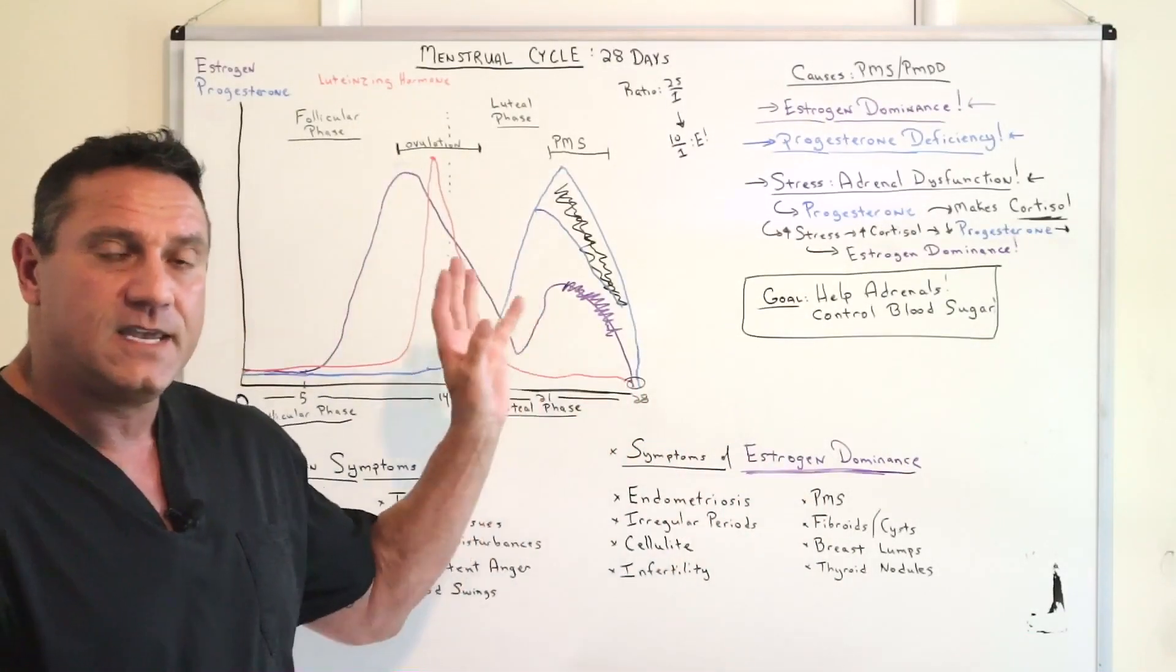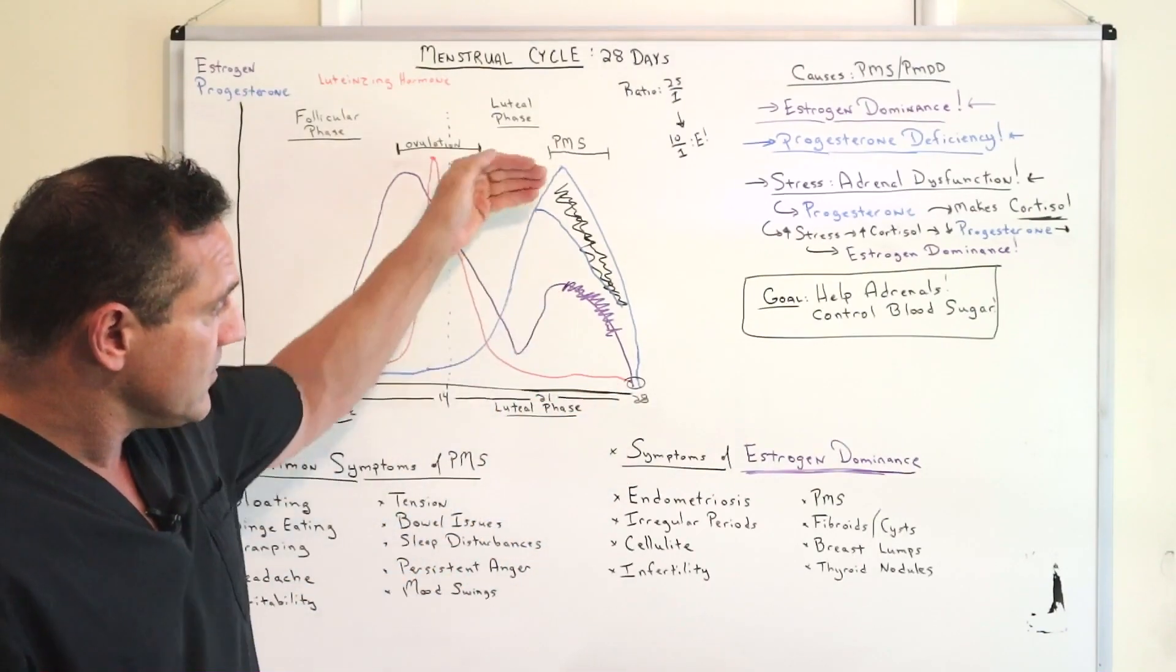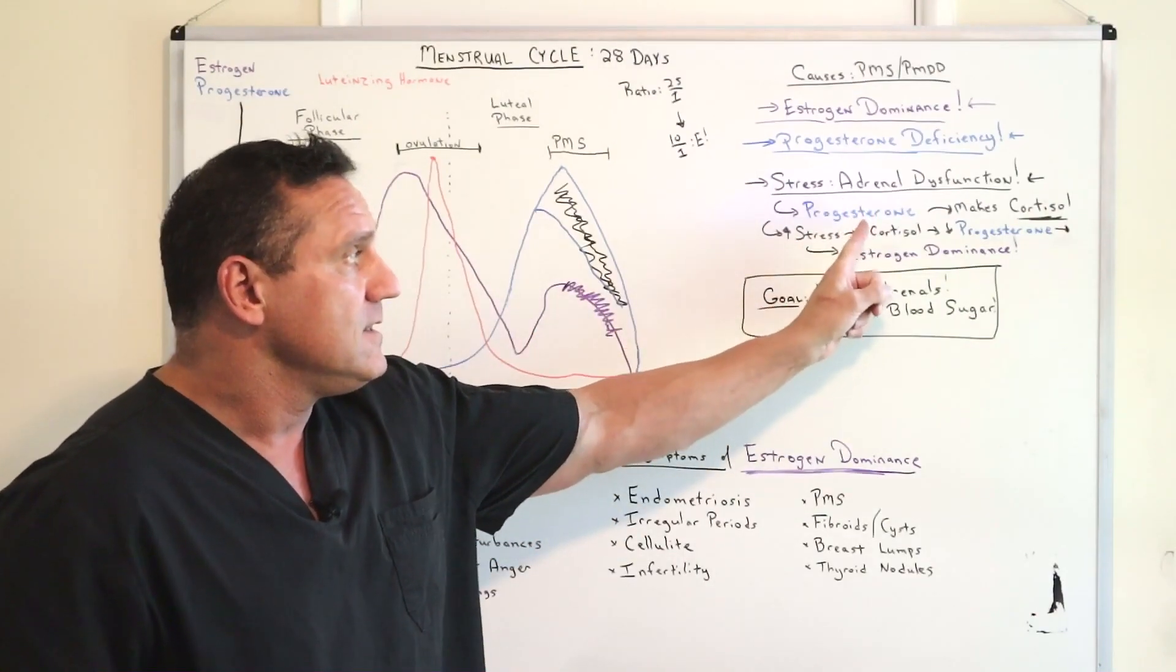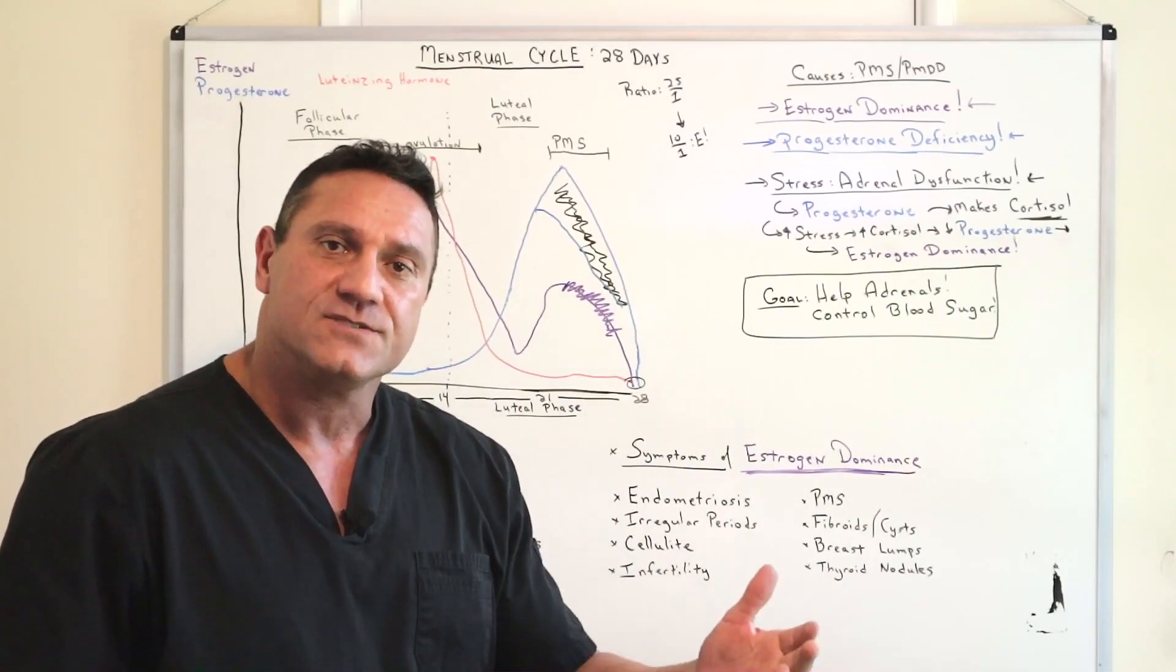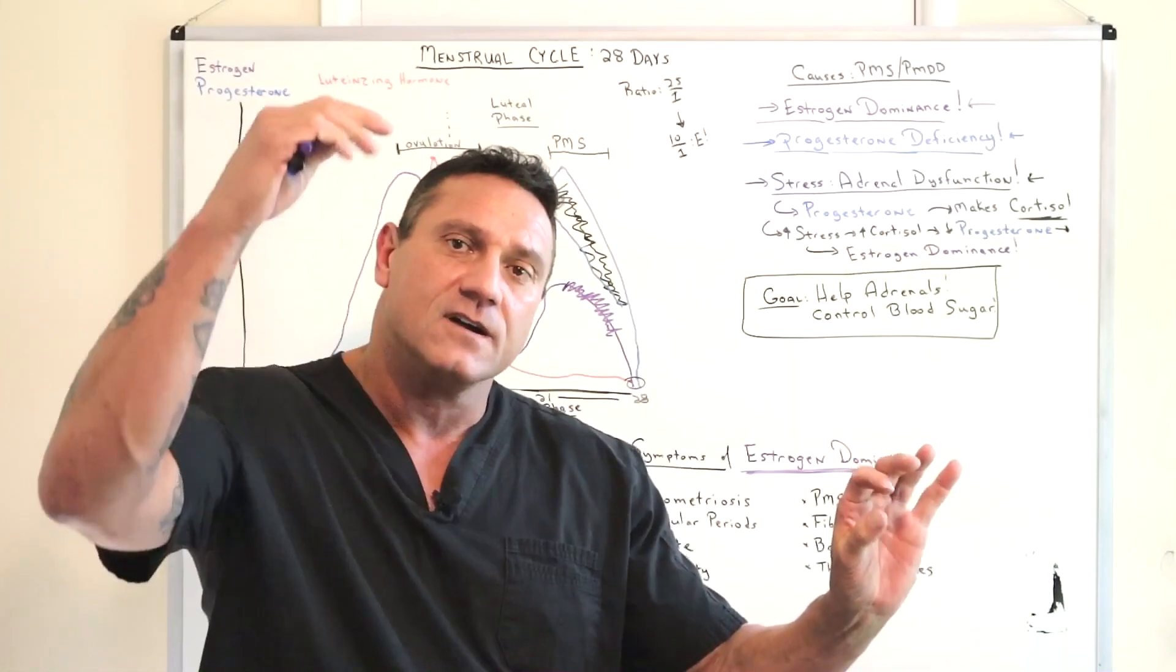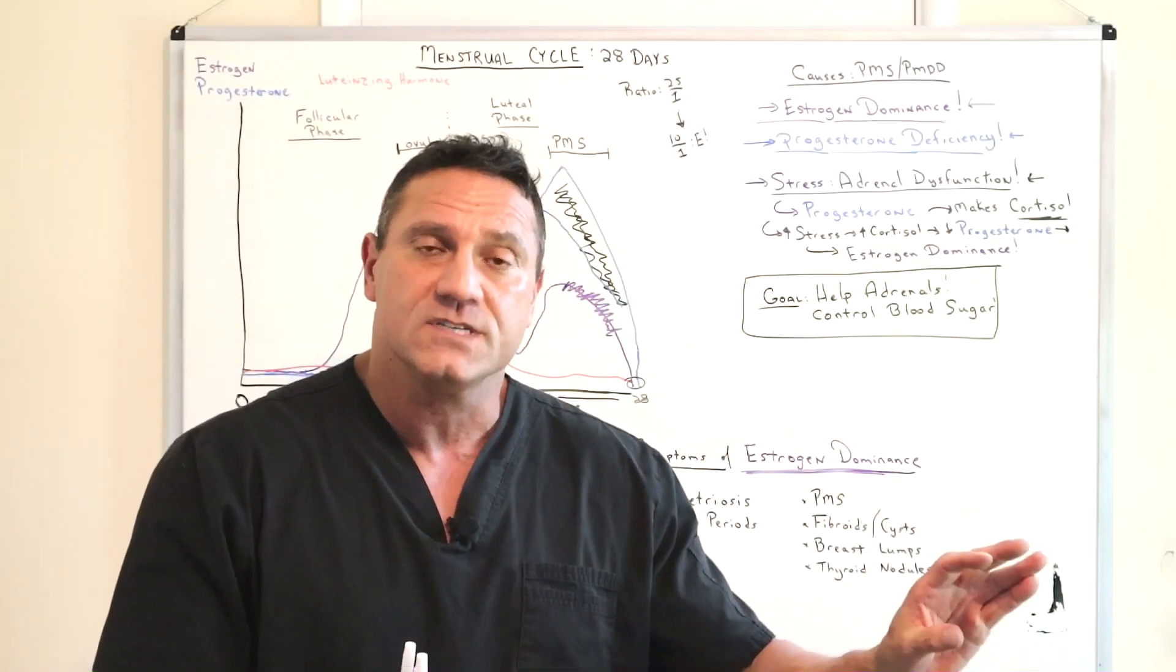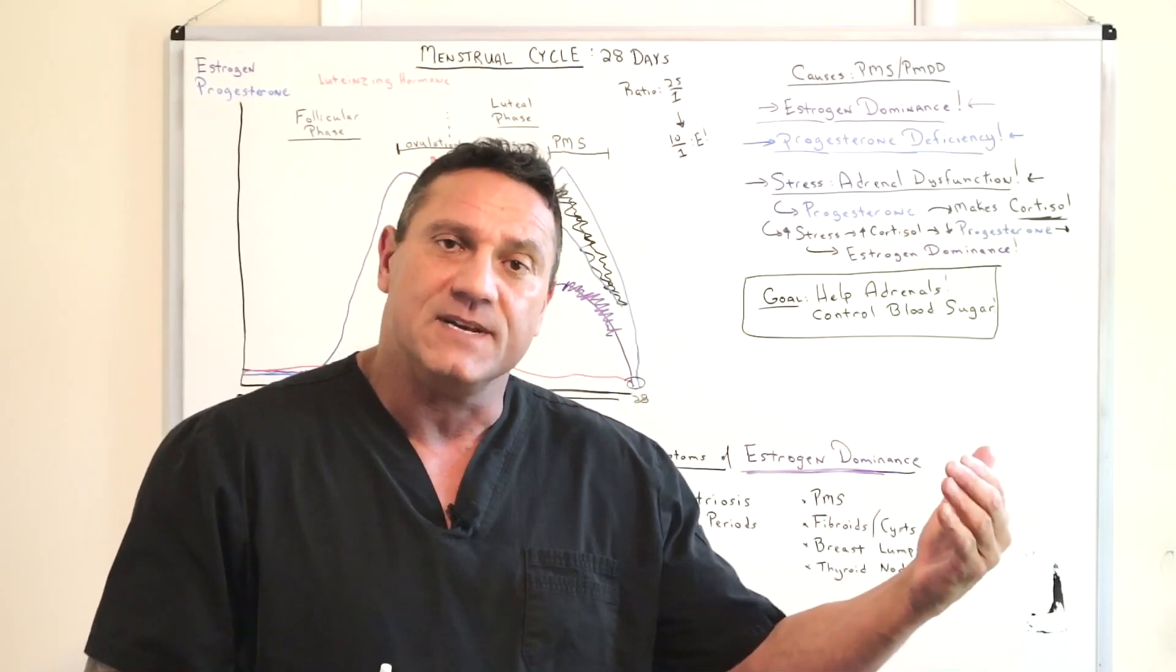Remember, so PMS, to sum it up. PMS, the last couple of days before your cycle, your hormones are dropping anyways. But when you're stressed out, what makes your stress hormone cortisol? Progesterone. Going downhill. The more stressed out you are, more progesterone is not doing its job of making cortisol because that's the main function of the adrenal glands. You become estrogen dominant.